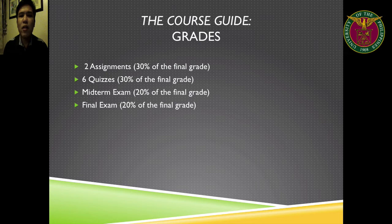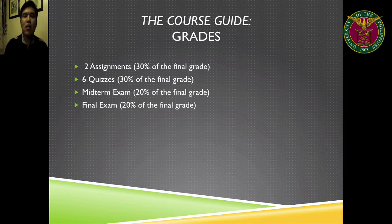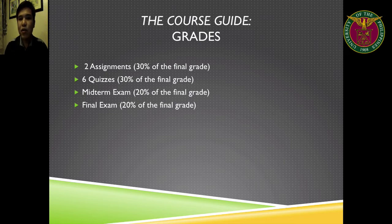How do we compute your grades? Your two assignments make up 30% of your final grade. Six quizzes will be 30%. Your midterm exam is 20%, and your final exam is 20%. Add them all together and we have 100%. The conversion of percentages to UP grades is also provided in your course guide, so just take note of it.